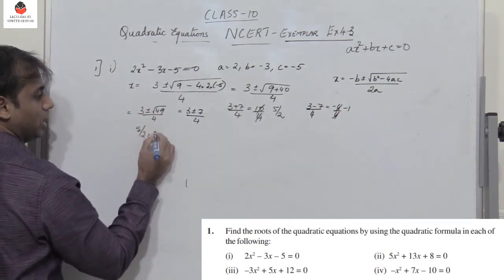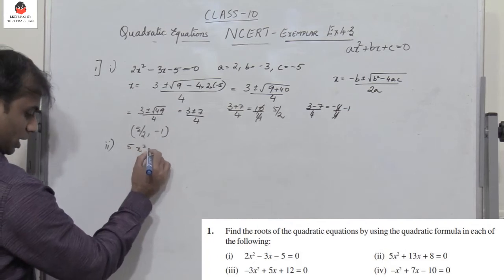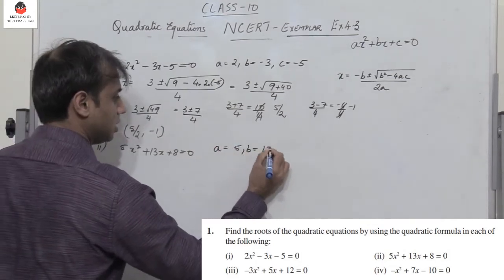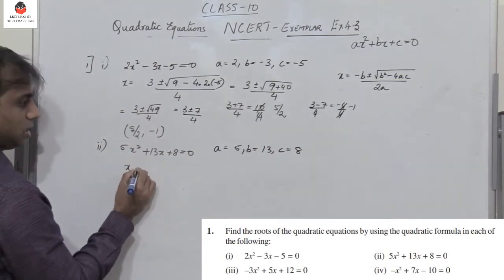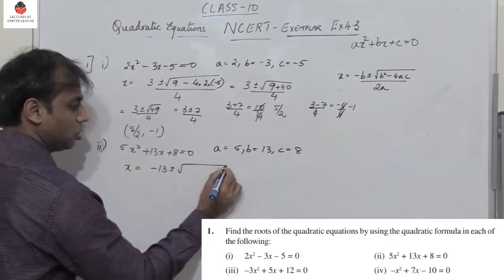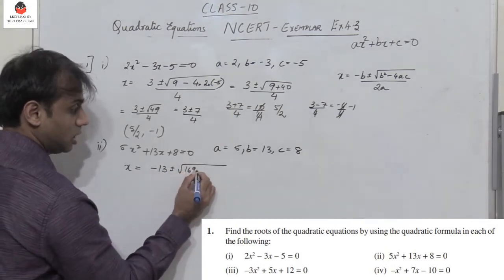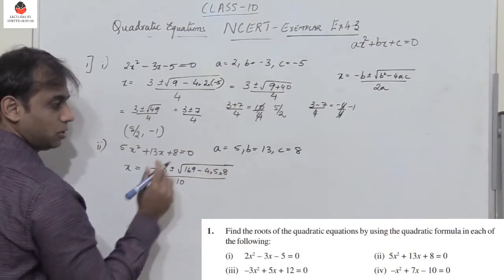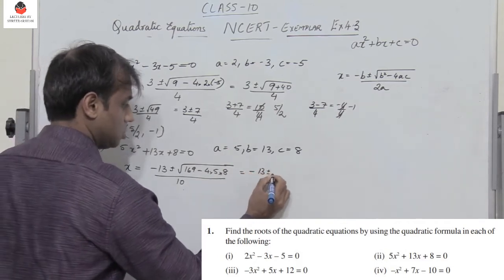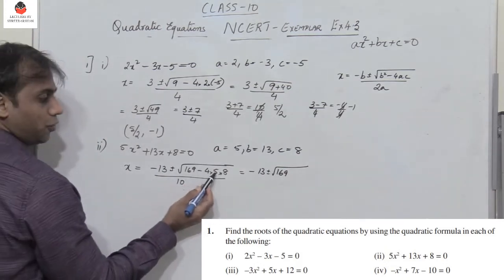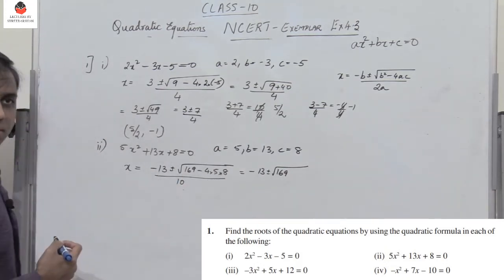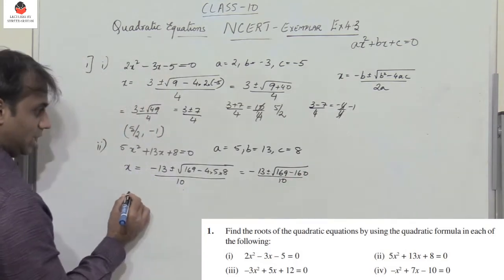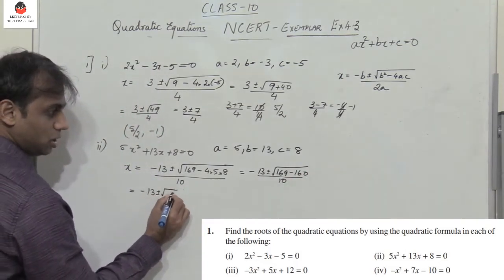Second equation: 5x² plus 13x plus 8 equals 0, so a equals 5, b equals 13, c equals 8. Using the formula: x equals minus 13 plus or minus root of 13² which is 169 minus 4 into 5 into 8, divided by 2a which is 10. That gives minus 13 plus or minus root of 169 minus 160, divided by 10.